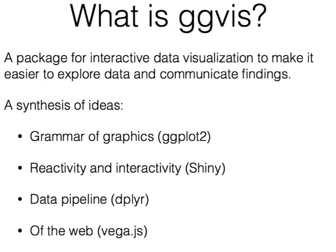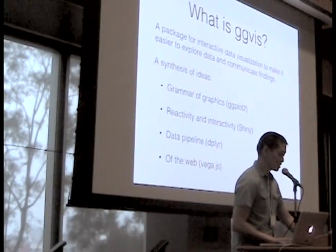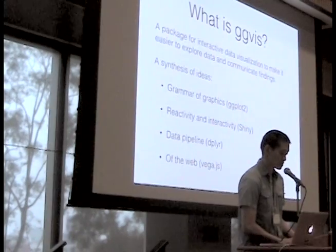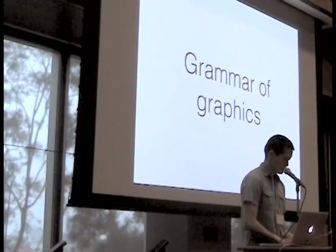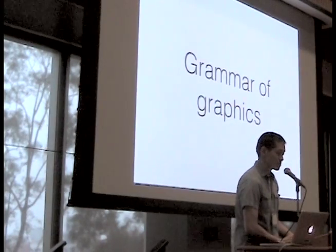It also brings in reactivity and interactivity, many of these ideas come from Shiny. It incorporates a new data pipeline, and many of these ideas can be defined. Finally, it's built for the web, it runs in web browsers, it's meant to be delivered over the web, and a lot of this comes from Vega.js, which is a JavaScript visualization library. My plan is to touch on each of these topics and along the way give a few demos.